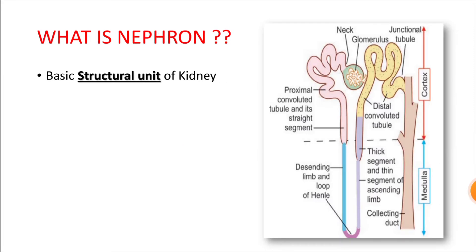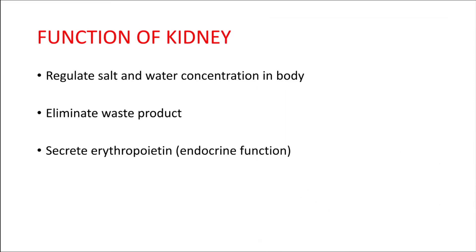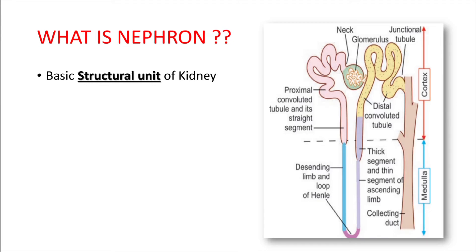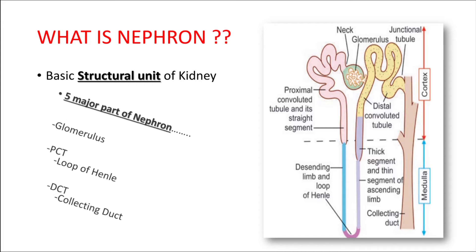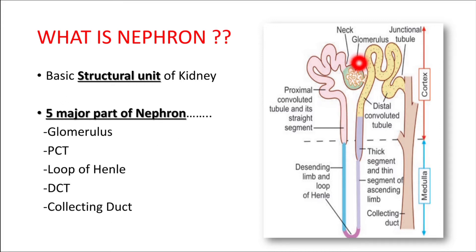Now we will discuss the proper histology of kidney. The nephron is the basic structural unit of a kidney. The nephron consists of five parts: glomerulus, which opens into the proximal convoluted tubule, which drains into the loop of Henle, which opens into the distal convoluted tubule, and finally opens into the collecting duct.